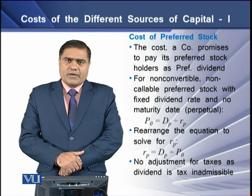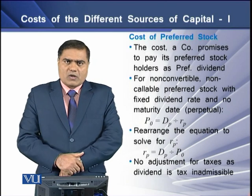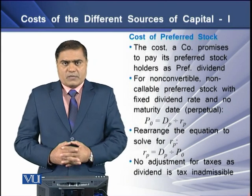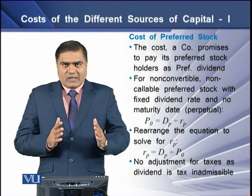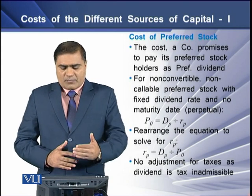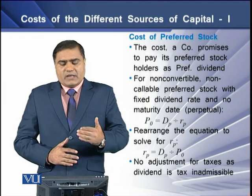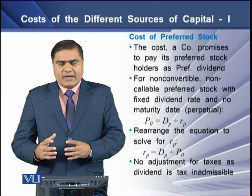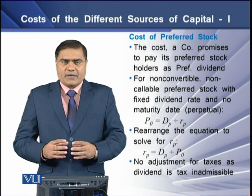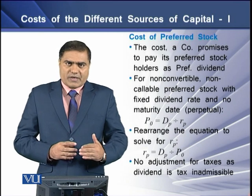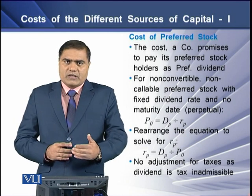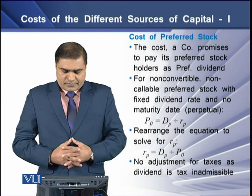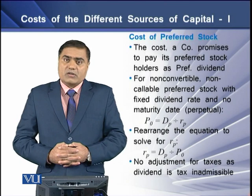The second component of capital is preferred stock. The cost of preferred stock is the cost a company promises to pay its preferred shareholders as a preferred dividend. This dividend is paid at a fixed and guaranteed rate throughout the life of the preferred share to its holder.